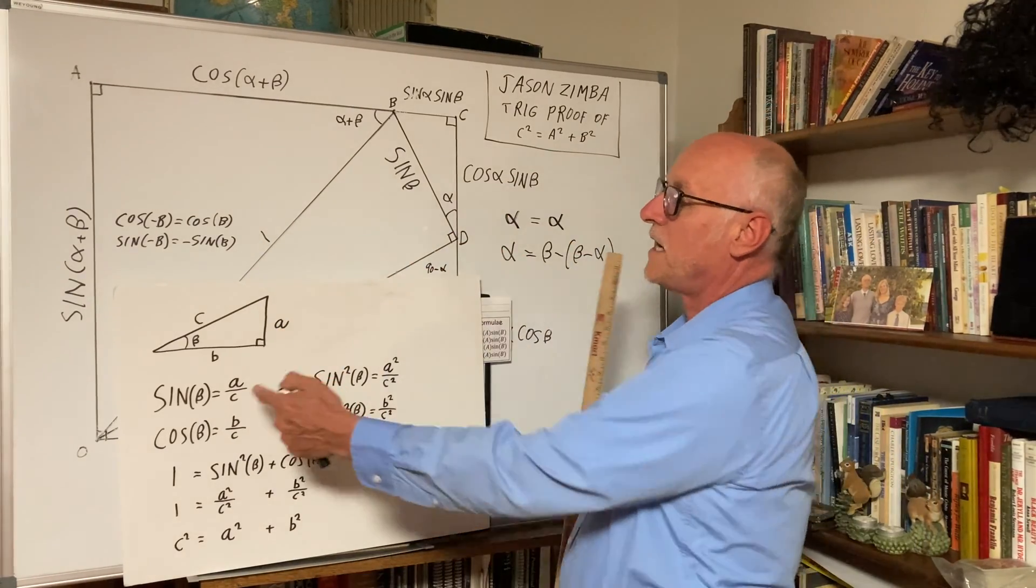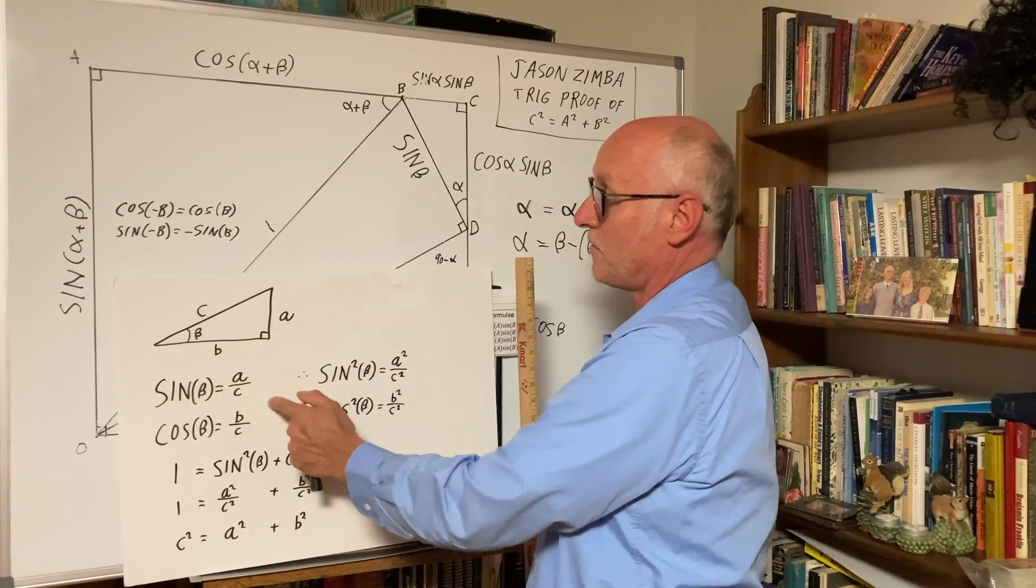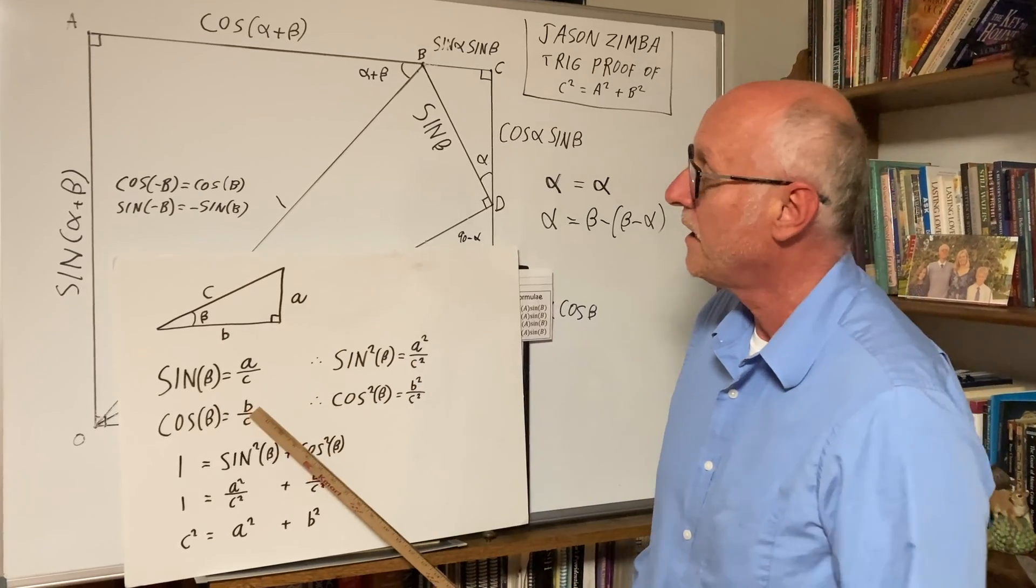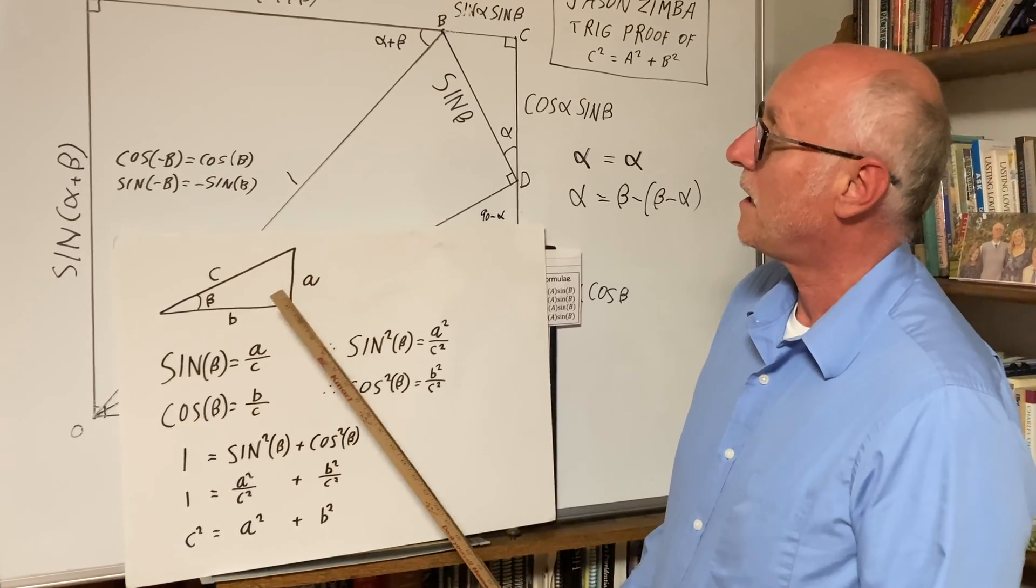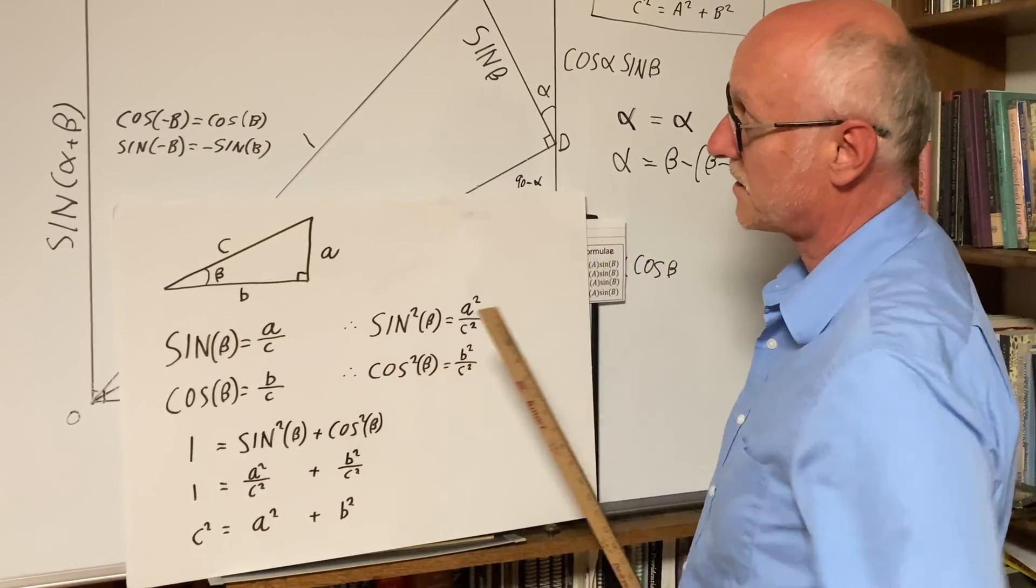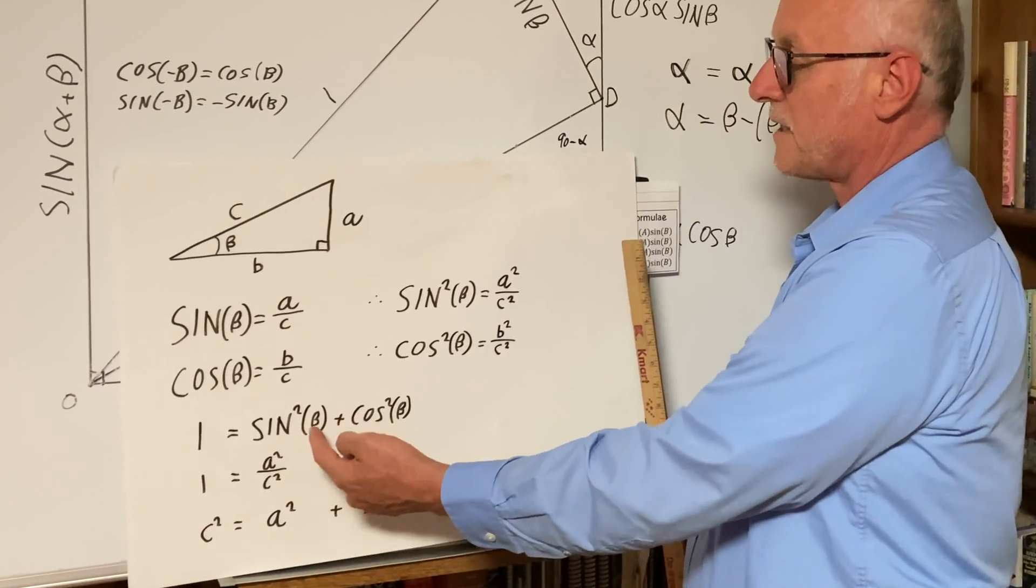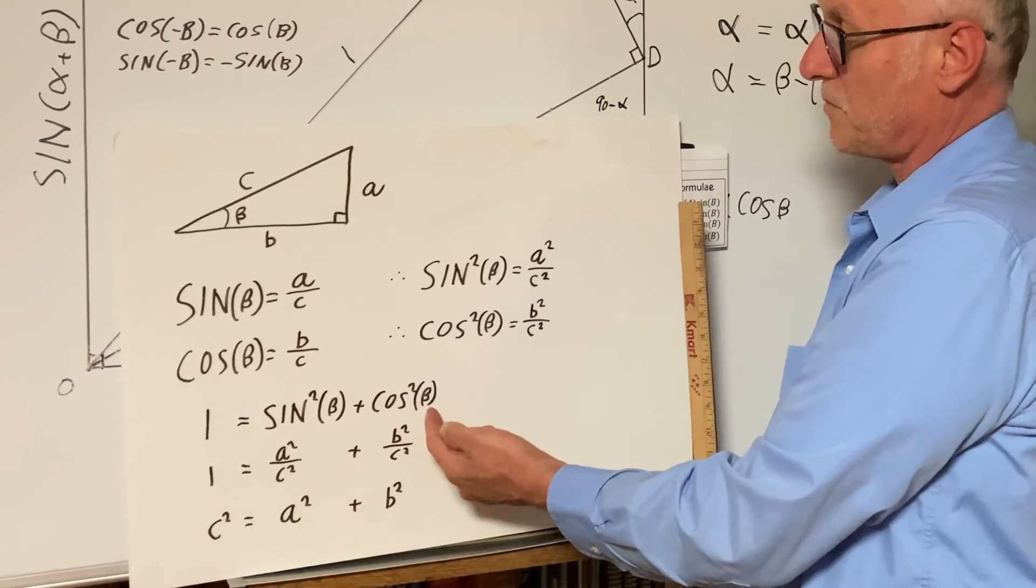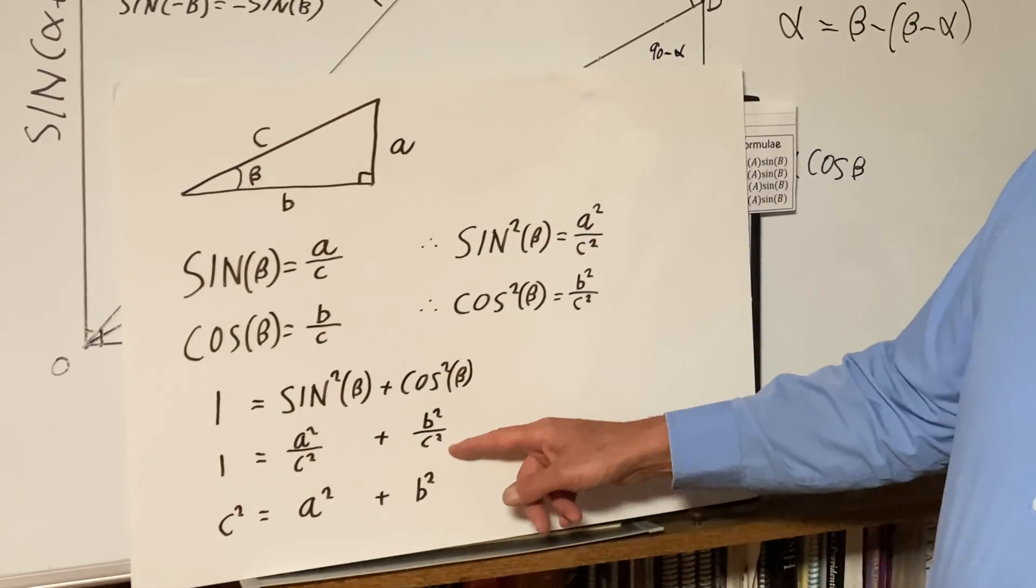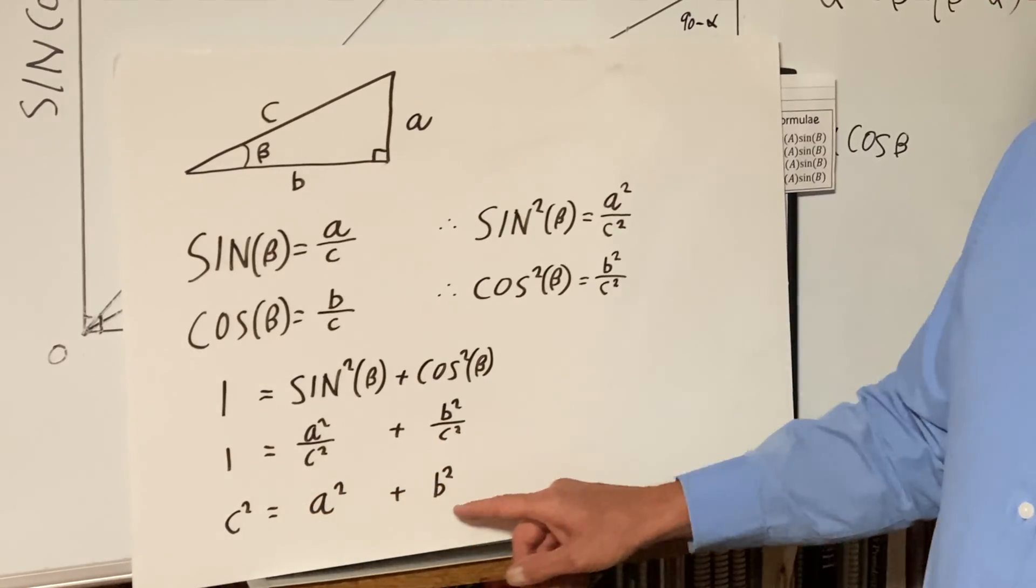Because sine of beta is opposite over hypotenuse, a over c, so sine squared is a squared over c squared. Cosine beta is b over c, the adjacent over hypotenuse, so cosine squared is b squared over c squared. So our famous trig identity, sine squared plus cosine squared, gets a squared over c plus b squared over c, that whole thing equals one. Now you cancel out the c squared on the numerator, c squared equals a squared plus b squared.